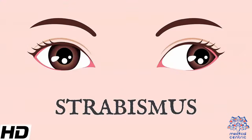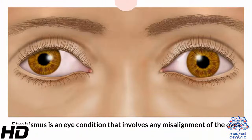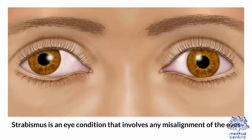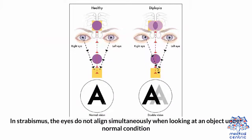Today's topic is strabismus. Strabismus is an eye condition that involves any misalignment of the eyes. In strabismus, the eyes do not align simultaneously when looking at an object under normal conditions.